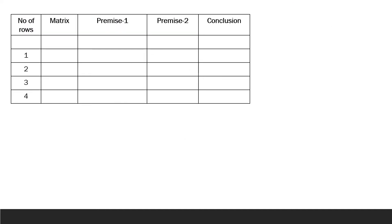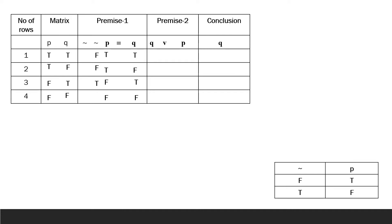Write the matrix with propositional variables P and Q, first premise, second premise, and conclusion. Assign values to P: true, true, false, false. Assign values to Q: true, false, true, false. In the first premise, write Q's values, negate them, then negate those values again. Now you are going to solve triple bar, which is the main connective in the first premise. Double negation means only an affirmative proposition.